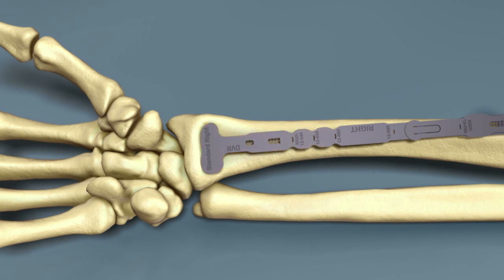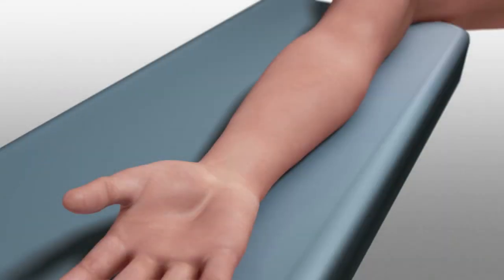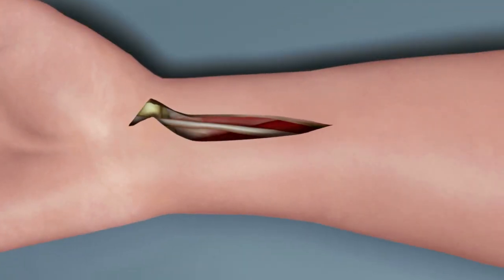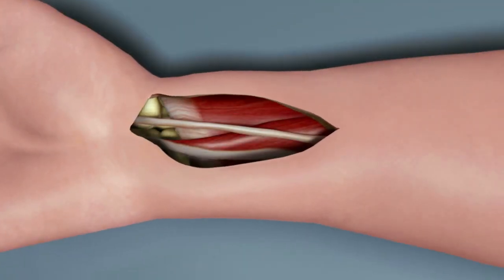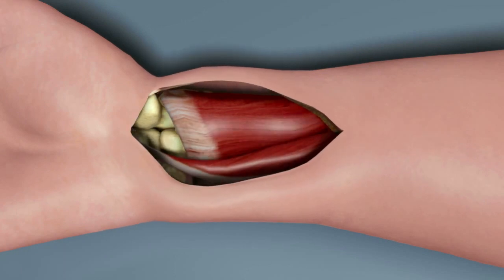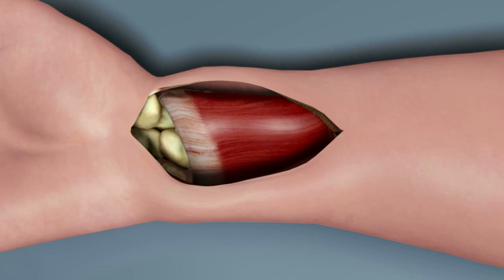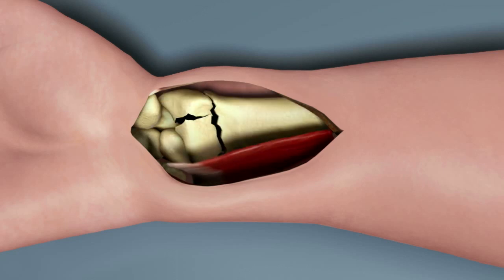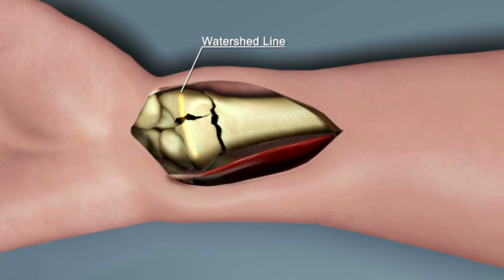Exposure can be achieved through an incision over the course of the FCR tendon. Retract the FCR tendon towards the ulna while protecting the median nerve. Expose the pronator quadratus and palpate the radius distally to identify the volar rim of the lunate fossa. This prominence is known as the watershed line.